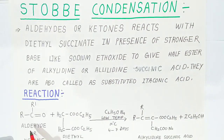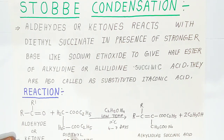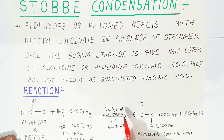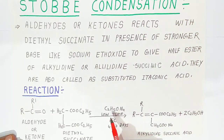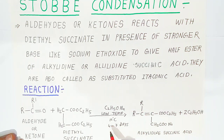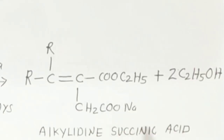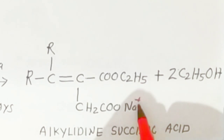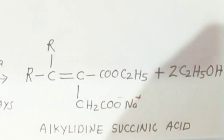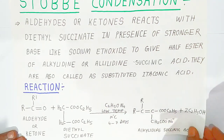Here, instead of aldehydes or ketones, the ester diethyl succinate is a very important compound in the Stobbe condensation reaction. In presence of sodium ethoxide as a base at low temperature of 10 degrees Celsius, the reaction takes 4 to 7 days and forms alkylidene succinic acid. When you hydrolyze the salt formed, you get alkylidene succinic acid and ethanol.